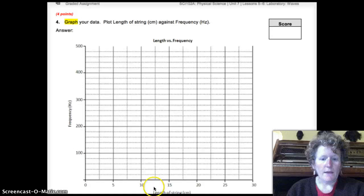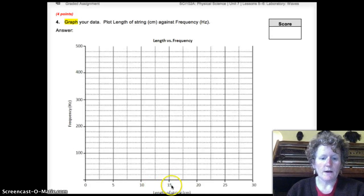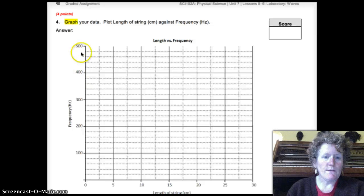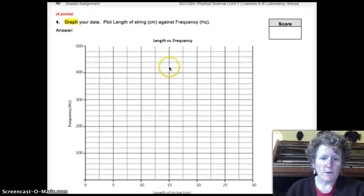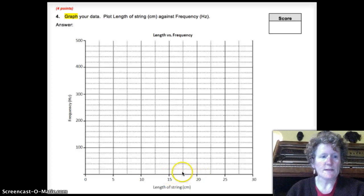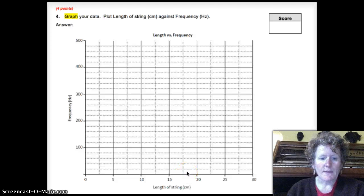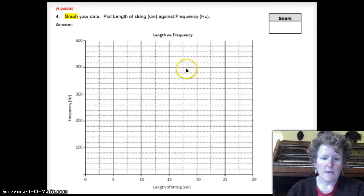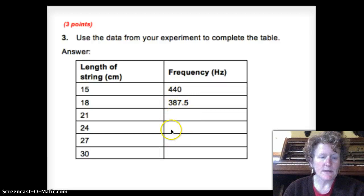So now it's time to graph your data. At 15 centimeters, the length of the string is down here. At 15 centimeters, we saw 440 hertz. So I'm going to travel up to 400. And then I look at the lines here. And I know that there are five spaces between 400 and 500. So I know that each block represents 20. So this is 420 right here. And this is 440 right here. So I make a dot about right here. Our second point was at 18. And I know halfway between 15 and 20 is 17.5. So 18 is going to be about right here. And then the hertz, what we saw on the oscilloscope, is going to be 387. So this line is 380. And 387 is about right here. So our second point is going to be about right here. You can fill in the rest of the data table. And when you have the rest of the data, you can fill out the rest of the graph.